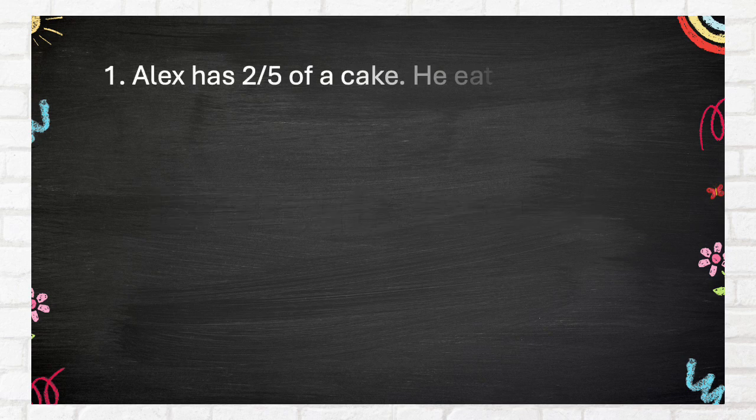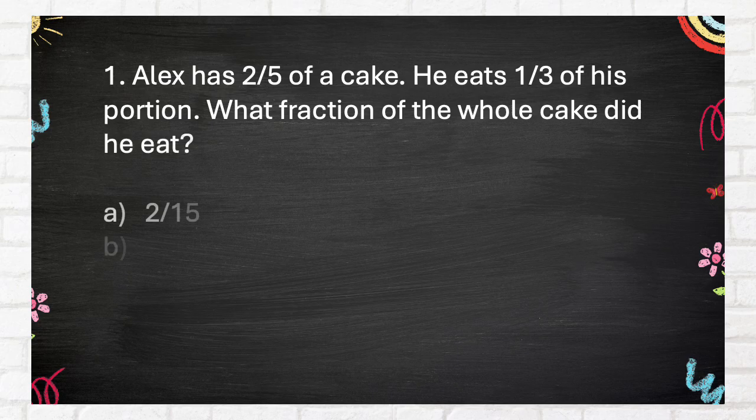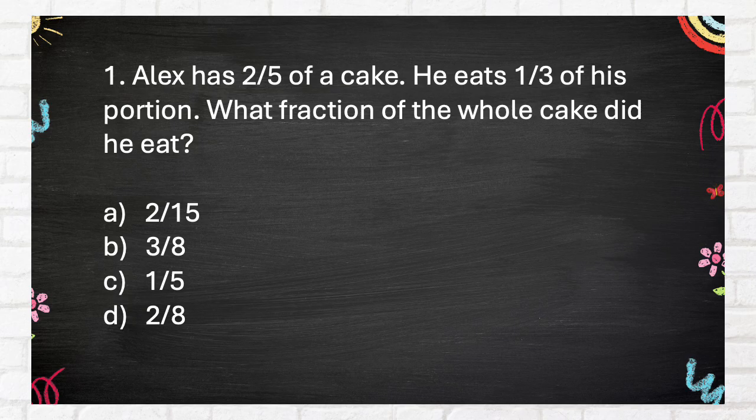Number 1. Alex has two-fifths of a cake. He eats one-third of his portion. What fraction of the whole cake did he eat? A. Two-fifteenths. B. Three-eighths. C. One-fifth. D. Two-eighths.